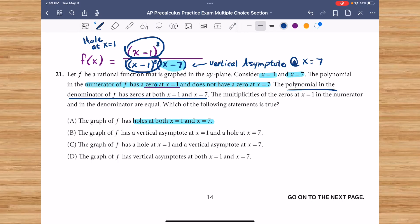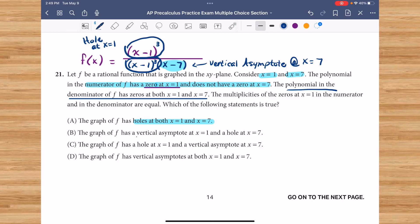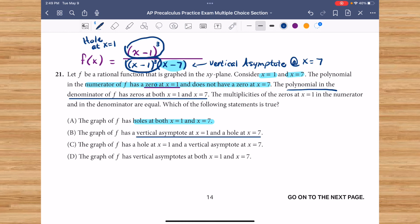B says the graph of f has a vertical asymptote at 1 and a hole at 7. Those are flip-flopped, so that is not our answer choice.